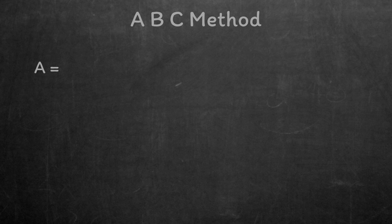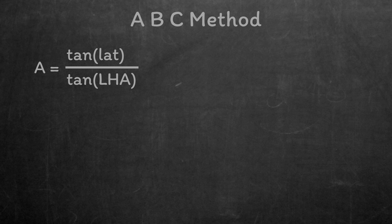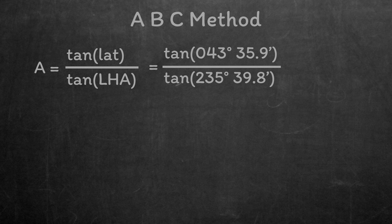The formula for finding A is tan of the latitude divided by tan of the local hour angle. If you use the A table in Nori's, it would give this to two decimal places, but I like to keep full precision and just write five decimal places instead, so I get 0.35061.